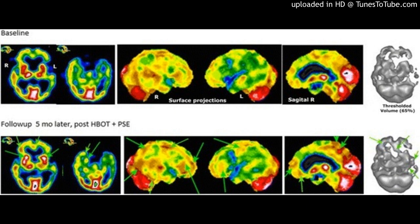Lower row: a follow-up single photon emission computed tomography image after five months showed similar overall appearance, but with increased perfusion in multiple small localized areas — namely in parts of the anterior aspect of the prefrontal cortex including the ventromedial aspect, right superior parietal, right lateral occipital, superior aspect of the left frontoparietal area, posterior cingulate, precuneus, and episylvian right temporal. In addition, significant increase was seen in the striatum bilaterally.